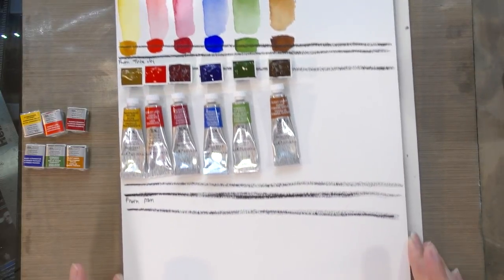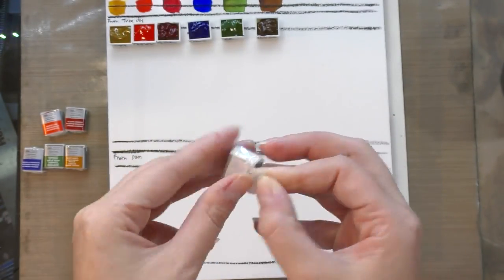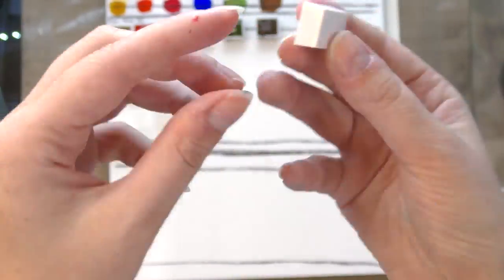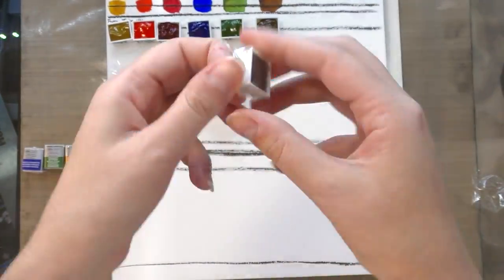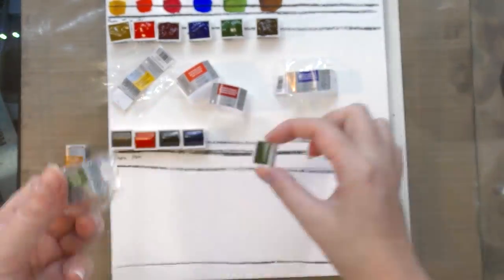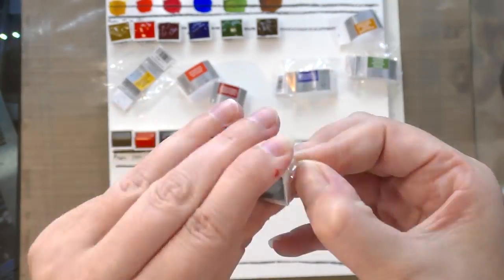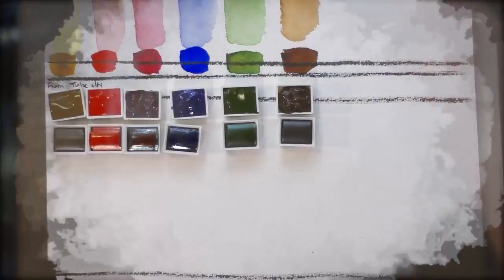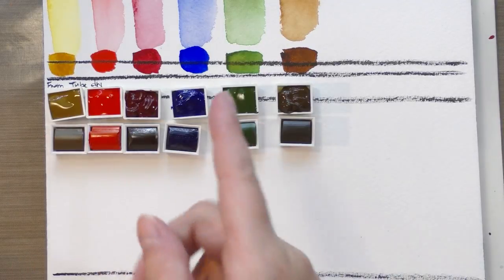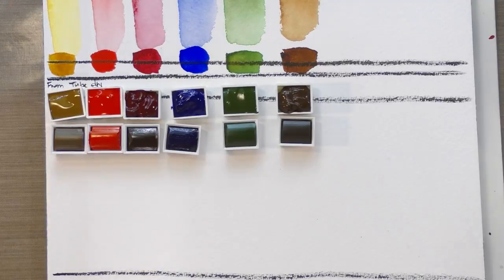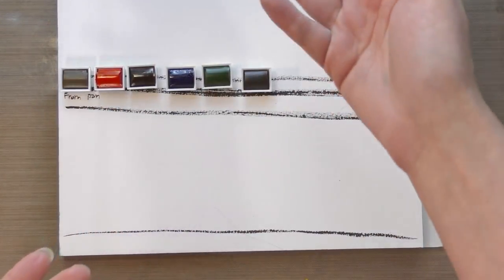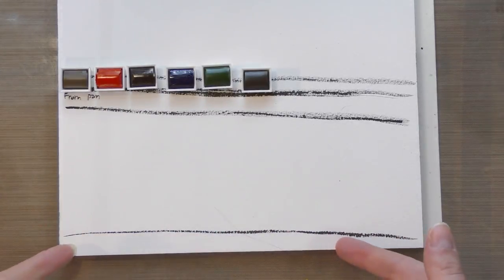So next we are going to go ahead and swatch our from pan colors. I just wanted to take a moment to compare the mass colors or the mass tones for the tube colors and for the half pans. Now the tube colors have not finished drying so I'm going to compare them again once they've dried out. But I just thought it was interesting how close some of the colors are and how much lighter some of the colors are. I'm going to approach the half pan swatching the same way I approach the from tube swatching. We're going to do a gradiated wash and then we're going to do a mass tone.